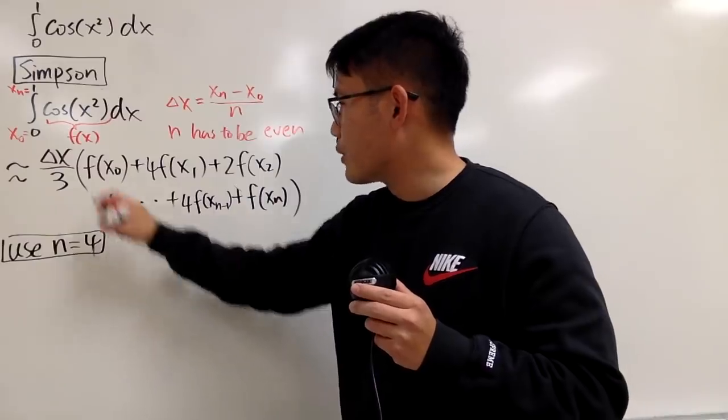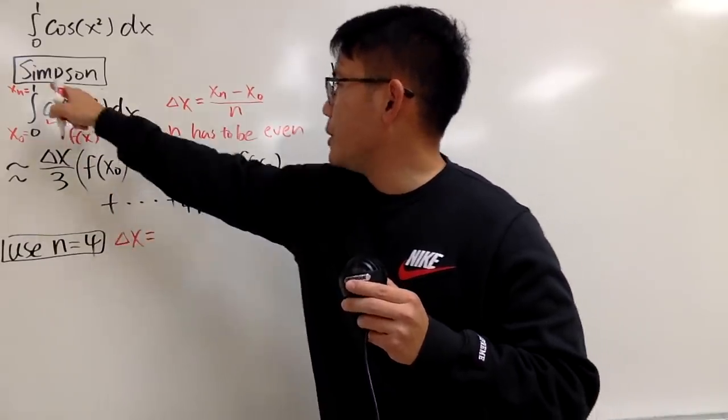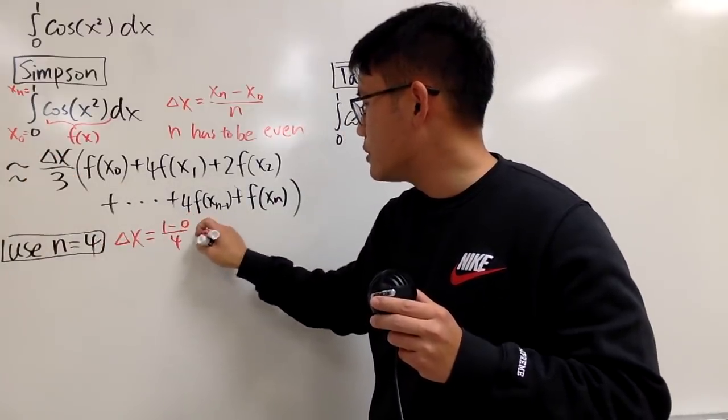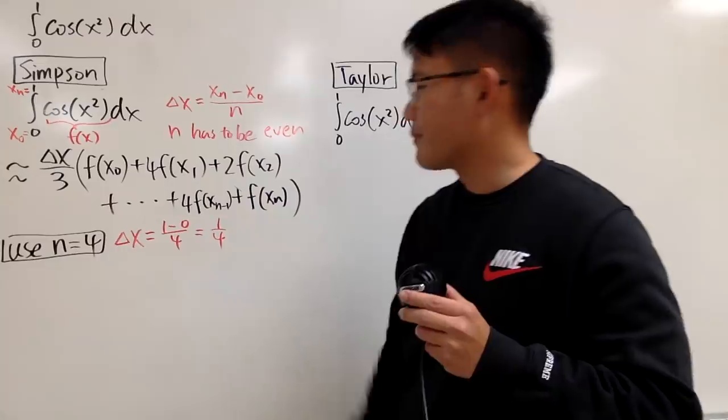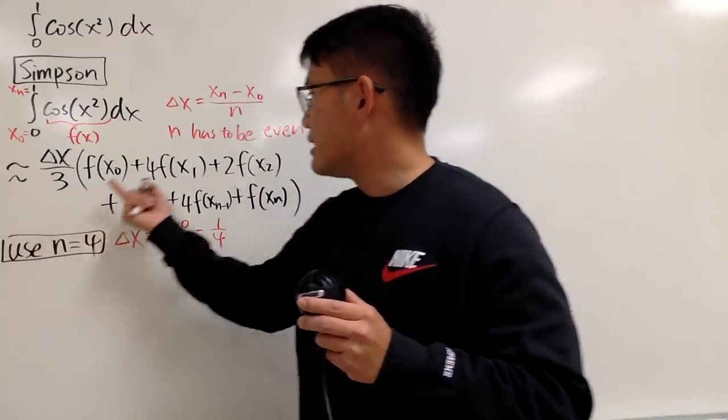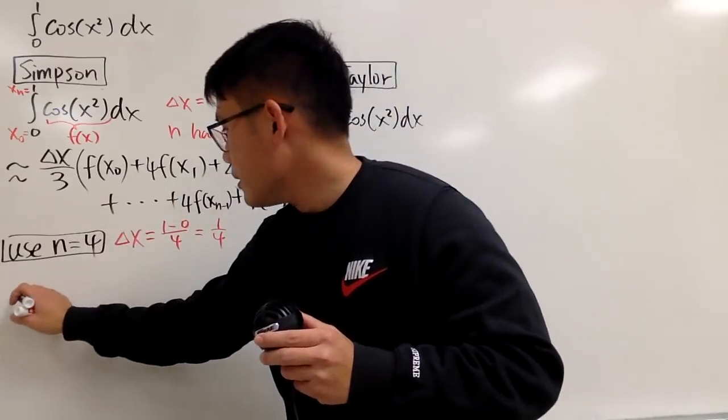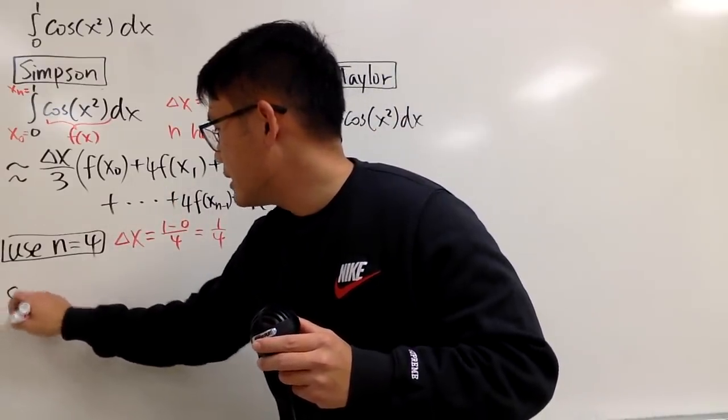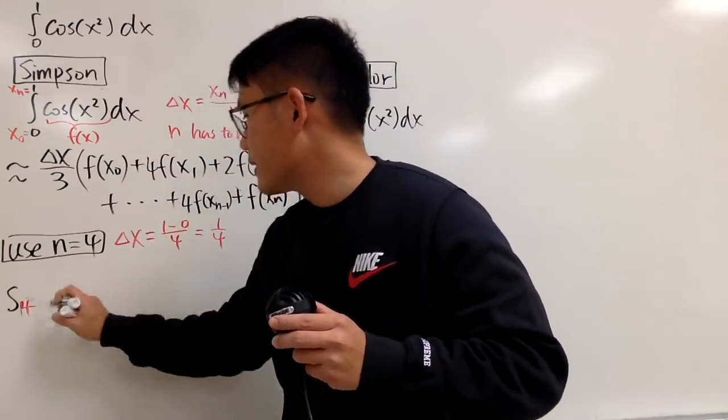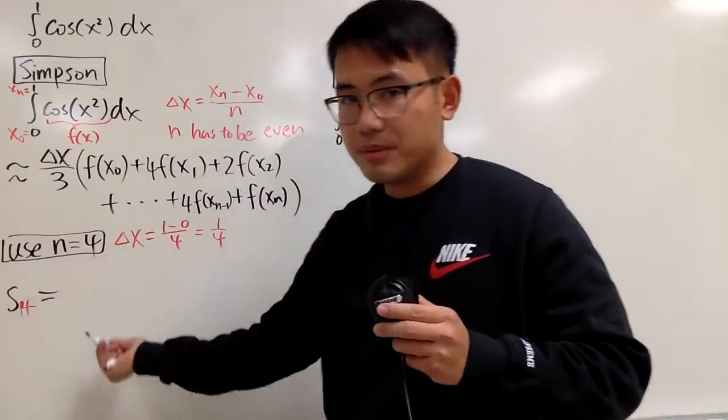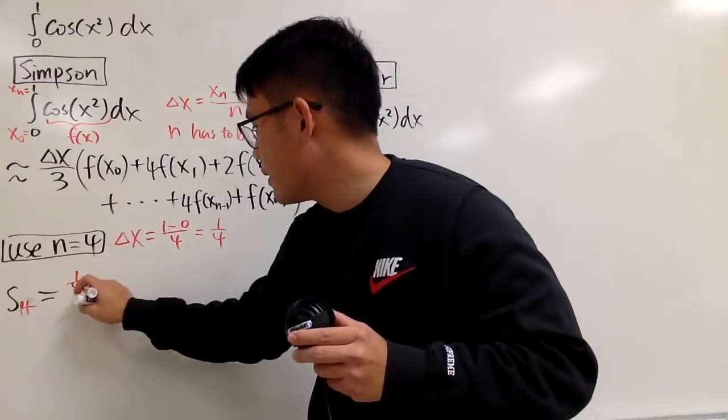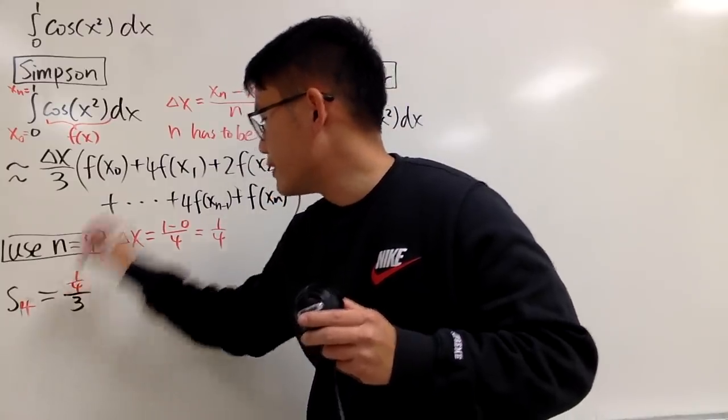We are going to let n be 4. You can calculate delta x first. Delta x is just going to be 1 minus 0 divided by 4, so it's 1 over 4. This is equal to, because this is Simpson's formula, delta x which is just 1 over 4, and then you always divide it by 3.